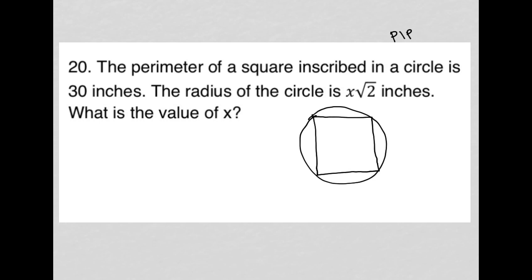The perimeter is 30, which means every side has to be 7.5, right? Because for a square, every side is exactly the same. So I could just divide—30 divided by 4, which is 7.5. So those are the sides of my square.